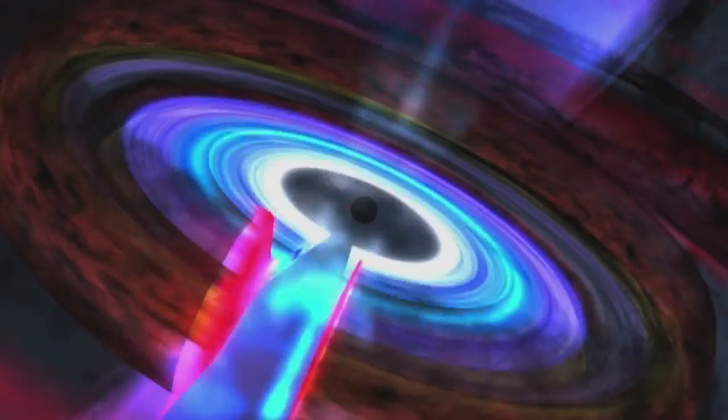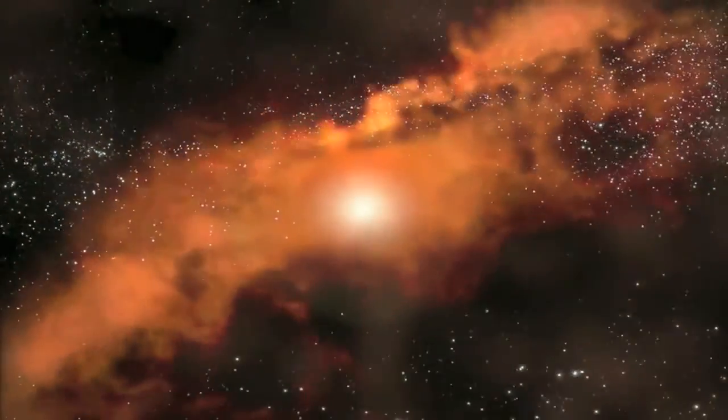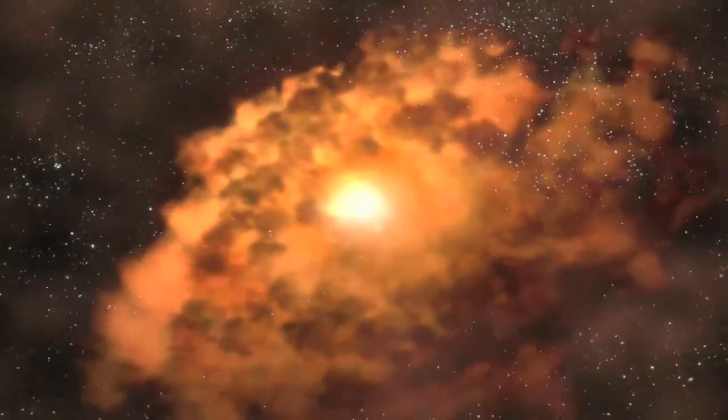The radio pattern on the left of the plaque shows 15 lines emanating from the same origin. 14 of the lines have corresponding long binary numbers which stand for the periods of pulsars, using the hydrogen spin-flip transition frequency as the unit.